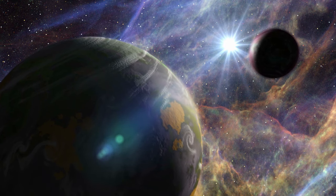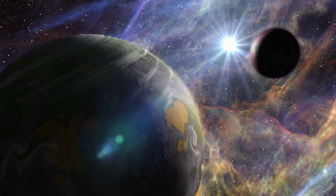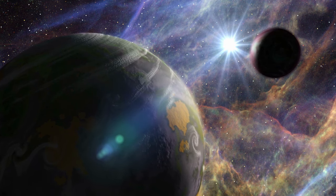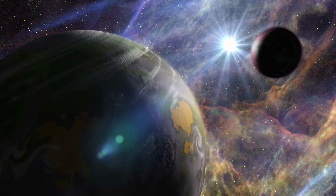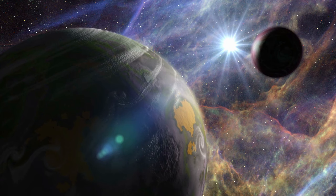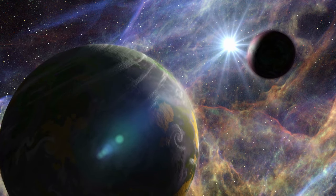Asteroid Belt, rocky orbits between Mars and Jupiter. Between the orbits of Mars and Jupiter lies the Asteroid Belt, a region populated by numerous small rocky bodies orbiting the Sun. These asteroids provide insights into the early formation of our solar system.